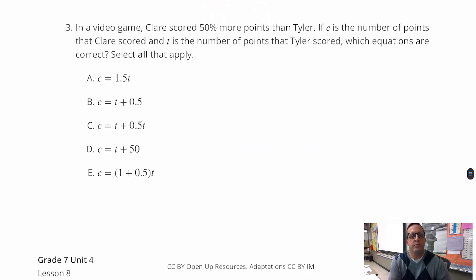Number three, in a video game, Claire scored 50% more points than Tyler. If C is the number of points that Claire scored, and T is the number of points that Tyler scored, which equations are correct? So this is, again, this is looking at an increase, 50% more. So 50% more would be 150%. And when you translate that to decimal form, that's going to be 1.5. So we're looking for all instances.